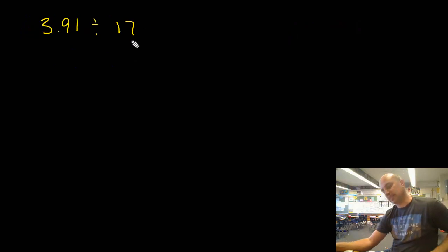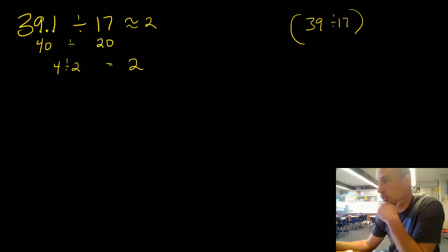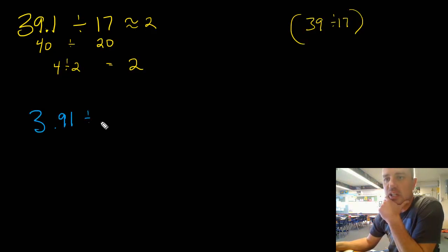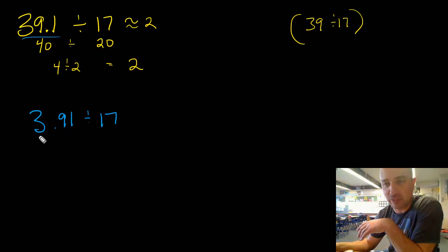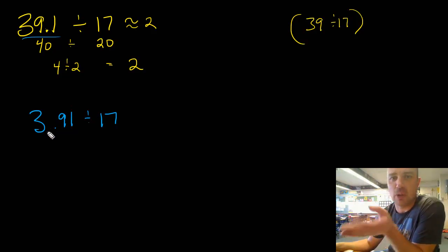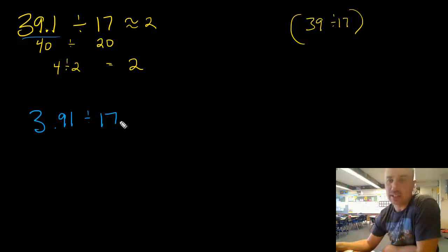Now let's look at 3 and 90 hundredths divided by 17. I'll bring the previous problem back up because these are related. If I'm thinking about it, I have 39.1 up here, and now I have 3.91 down here — that's smaller by a factor of 10. So I would estimate that my quotient of 2 is also going to be smaller by 10, giving me an estimated quotient of 2 tenths. But let's double-check.